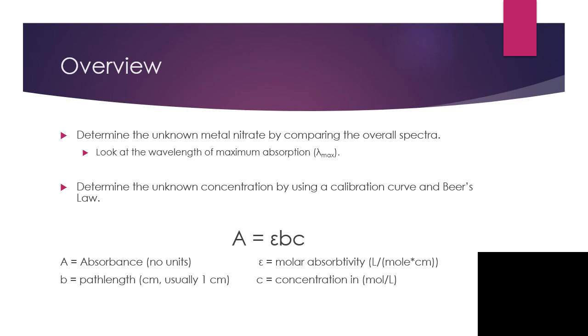The way that we determine the unknown concentration is we're going to have to construct a calibration curve, and we're going to use Beer's Law. In case you've never heard of Beer's Law before, the equation is the absorbance is equal to epsilon bc. So A equals epsilon bc. The A stands for absorbance, which has no units.